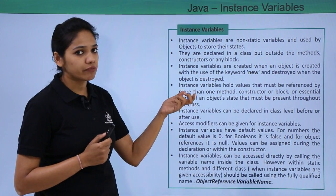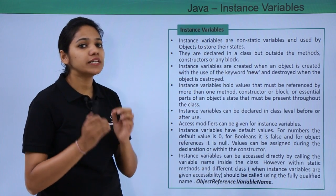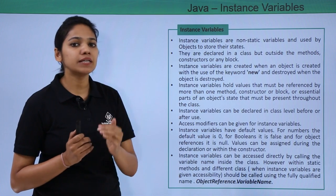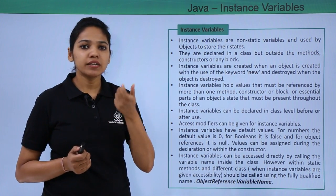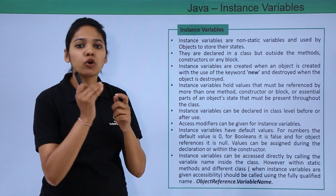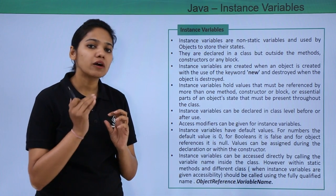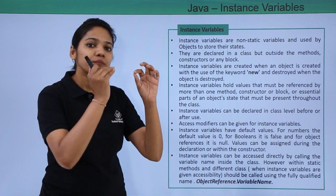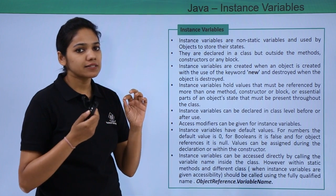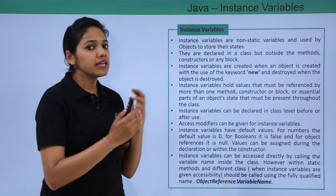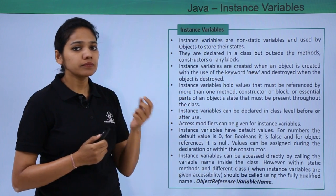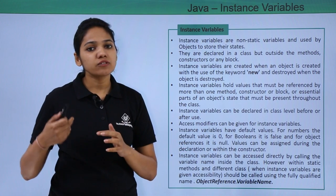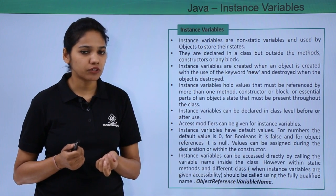Why do we create instance variables? An instance variable is mainly created if it needs to be used multiple times in a class. If you declare a variable inside a method it will not be accessible by any other method, but if you create a variable inside a class it can be accessed by any of the methods. These variables can also have access modifiers, unlike local variables which did not have any access modifier.